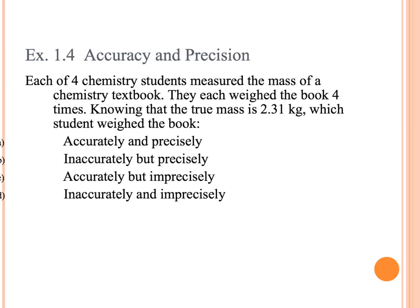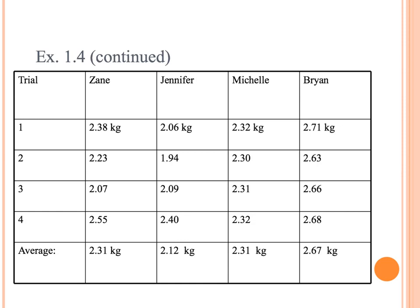Here we have some information about accuracy versus precision in a lab setting. The important part here is that we say the true mass of this textbook, we've got four students weighing a textbook, is 2.31 kilograms. And then we want to identify who is accurate and precise, inaccurate and precise, accurate imprecise, and inaccurate imprecise. And just really highlight the definitions or the differences between accuracy and precision in a science context. The first one we're going to see here is, let's take a look at 2.31 is the real answer, kilograms. To see who's correct, we're going to look down here at the averages.